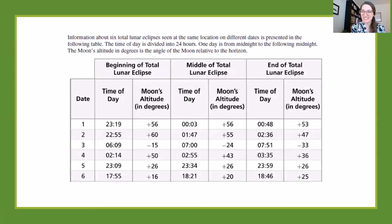The second part that they give us here is a table that gives lots of information about the lunar eclipse. And it says at the top, information about six total lunar eclipses seen at the same location on different dates is presented in the following table. The time of day is divided into 24 hours. One day is from midnight to the following midnight. The moon's altitude in degrees is the angle of the moon relative to the horizon. So we can see a lot of different information here about time of day, the different dates,